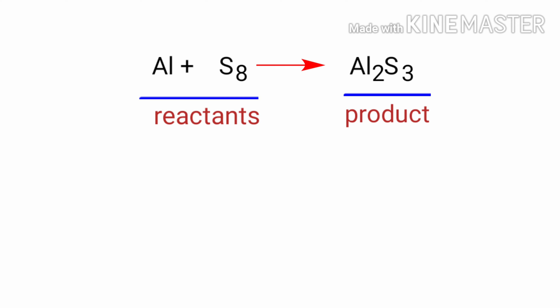In this equation, the reactants are aluminum and octosulphur and the product is aluminum sulfide. If you look at this equation, the equation is not balanced.